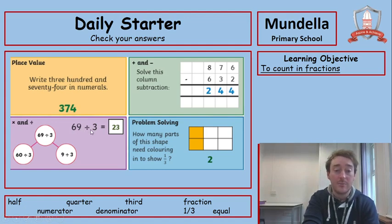69 divided by 3 is 23 because we're literally just doing 6 divided by 3 and then 9 divided by 3 which gives us our numbers there.